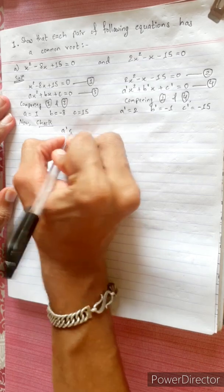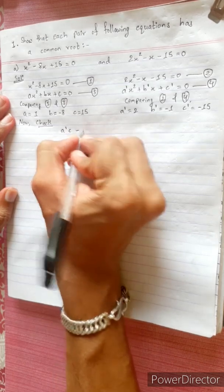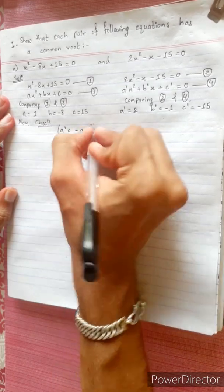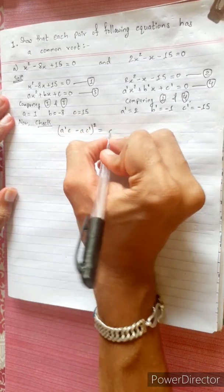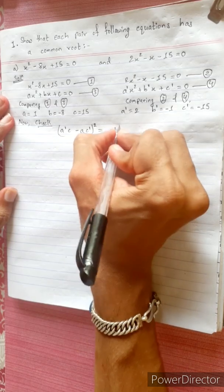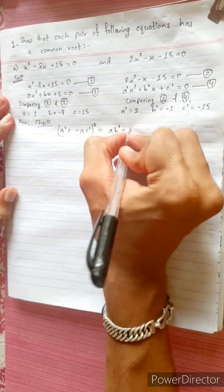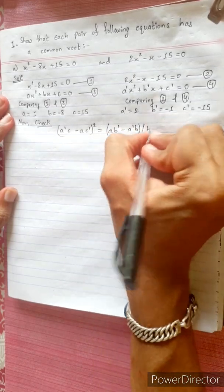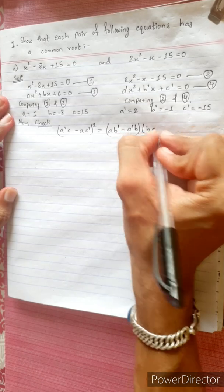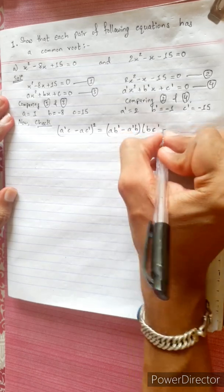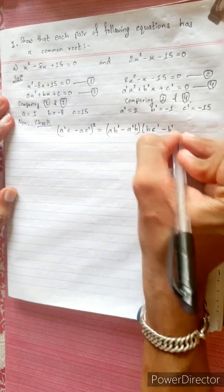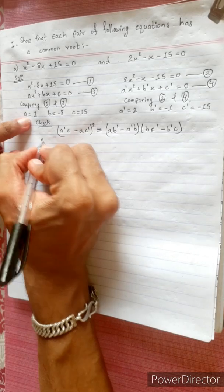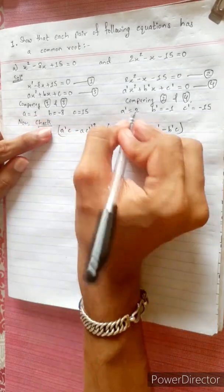The condition for one common root is: (a·c-dash minus a-dash·c) squared equals (a·b-dash minus a-dash·b) into (b·c-dash minus b-dash·c).